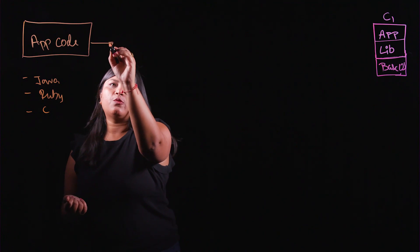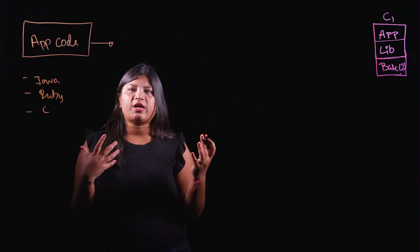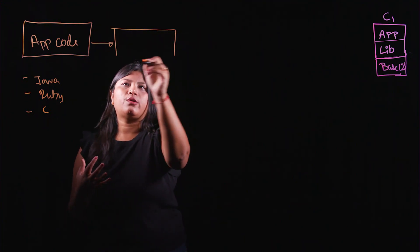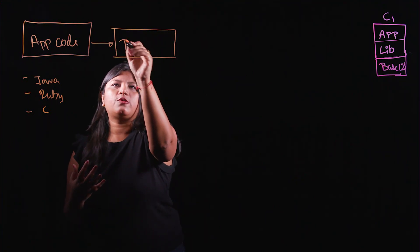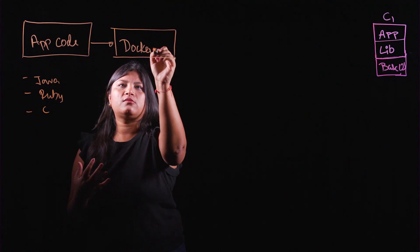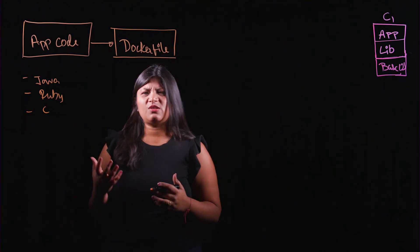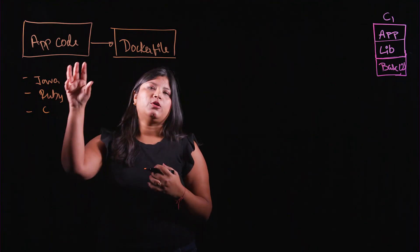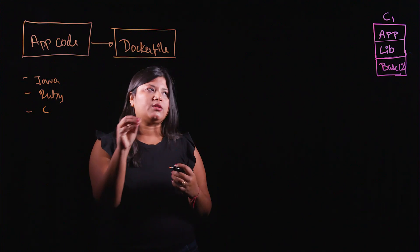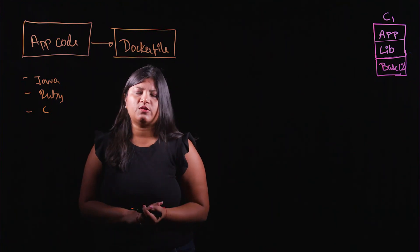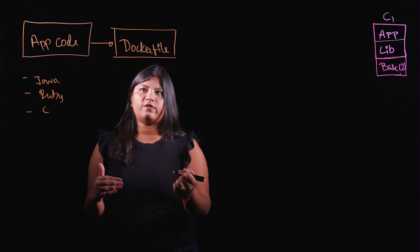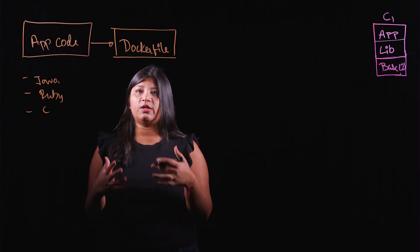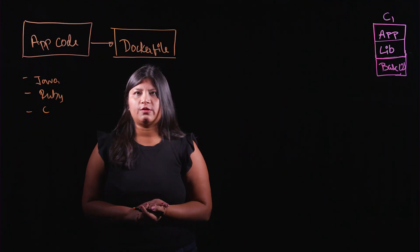Once you have something working, dev teams would like to package it up in a container. To do so, most likely they are going to start writing a file called a Dockerfile. This Dockerfile is essentially a text file that has instructions on how to package up your application code such that it can then run on a container runtime. It needs to have a set of instructions that it can take and then start building a container image.